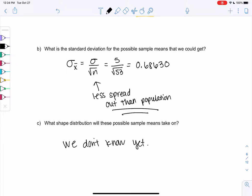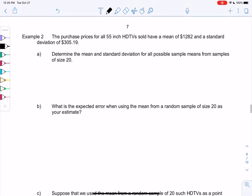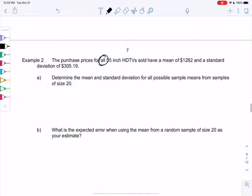So let's try another example. We're going to look at the prices of all 55-inch HDTV's. The 55-inch doesn't really tell us anything for statistics. It just tells us the size of the TV. But we do know this is a population because of the word all. So they have a mean of 1282, so mu is 1282, and a standard deviation of 305.19. And that will be sigma.